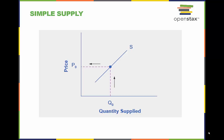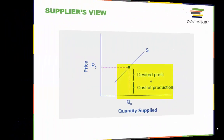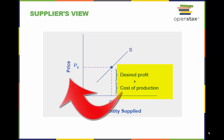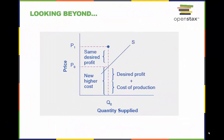The concept of Ceteris Paribus applies to the supply curve as well. This means that holding all other factors equal, a change in price only impacts the quantity supplied along the same supply curve. The cost of production and the desired profit equal the price a firm will set for a product. If we change other factors related to the firm's cost of production or the desired profit, then the supply curve shifts.